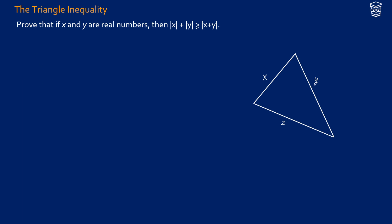What this is saying in a triangle is if we have three sides x, y, and z, and we take a look at side z — the distance from one end of z to the other end — it is going to be less than or equal to the distance of x plus the distance of y. In other words, taking the longer path through x and y is always going to be longer or equal. The case when it's equal is when it's a flat line.